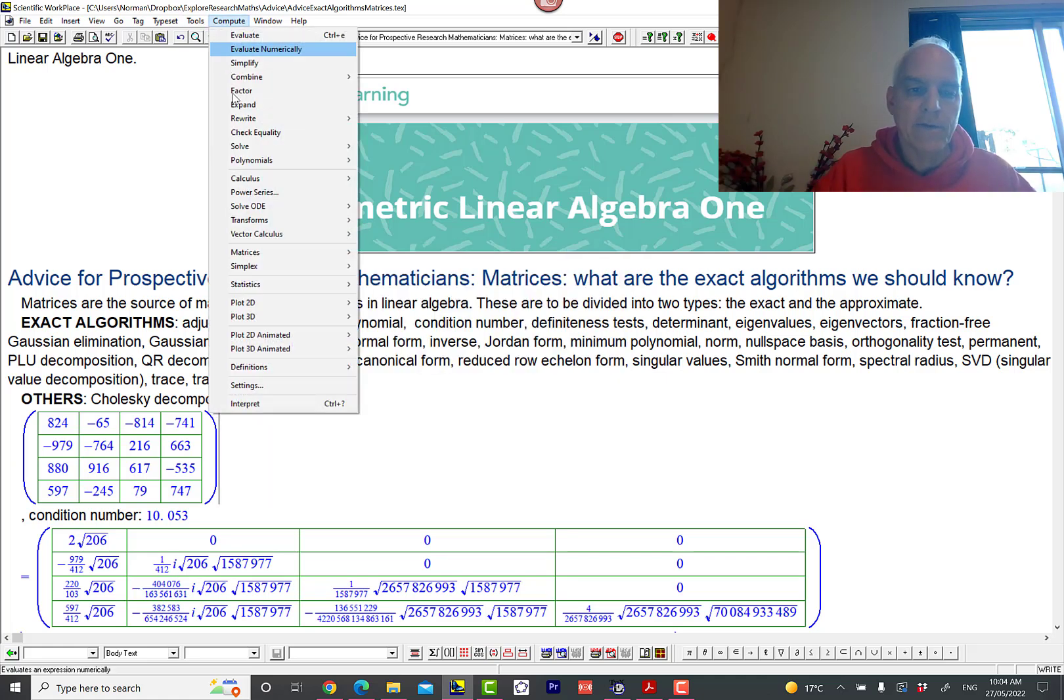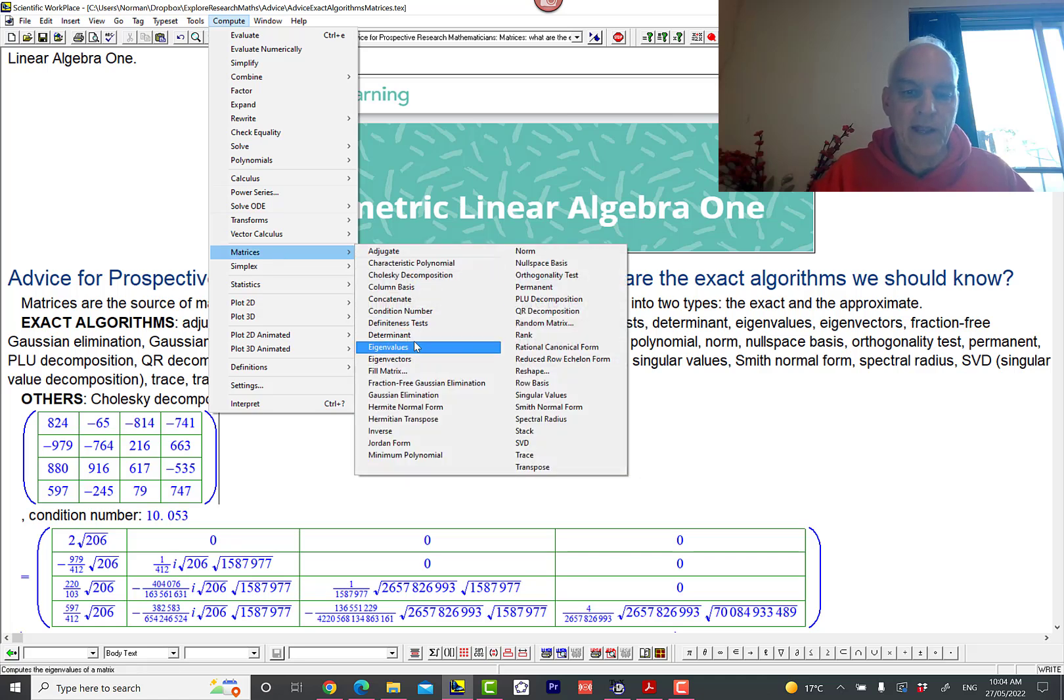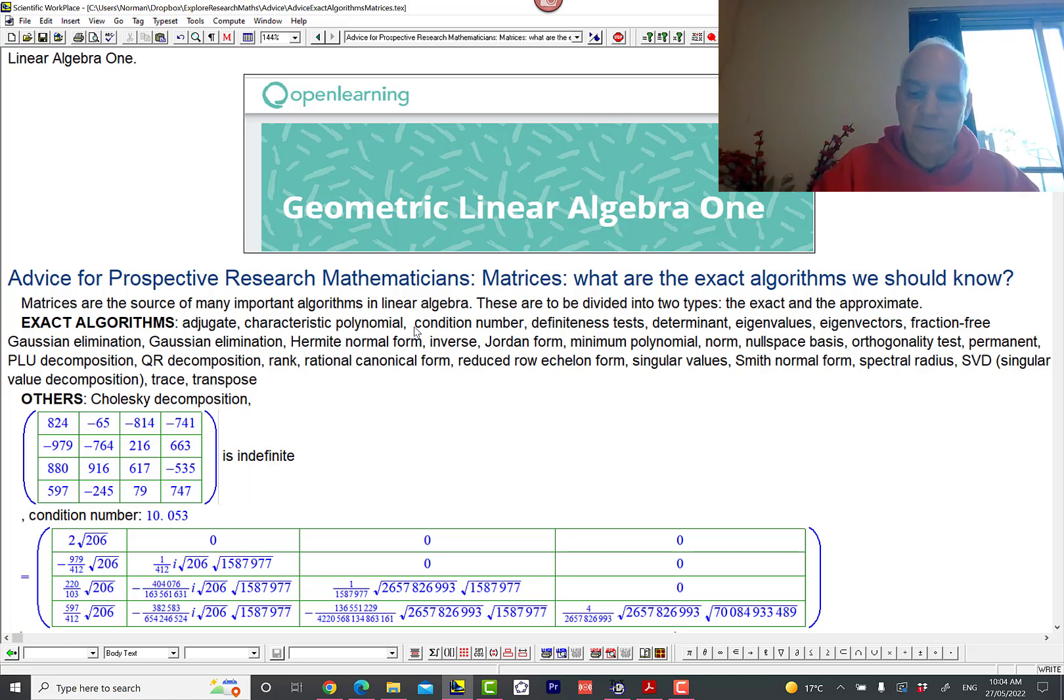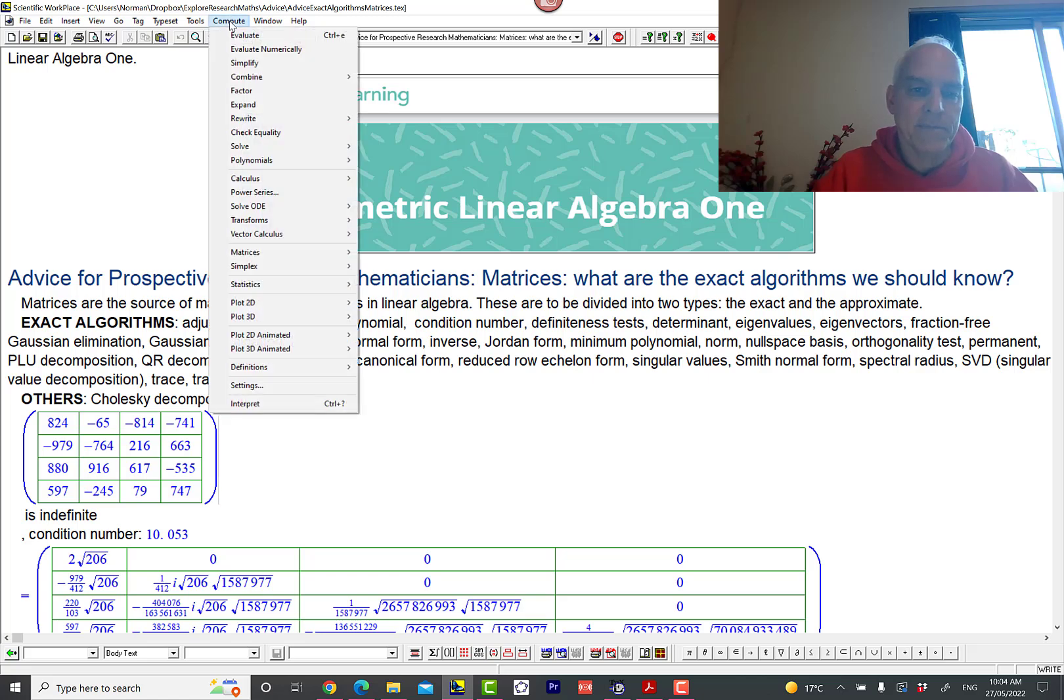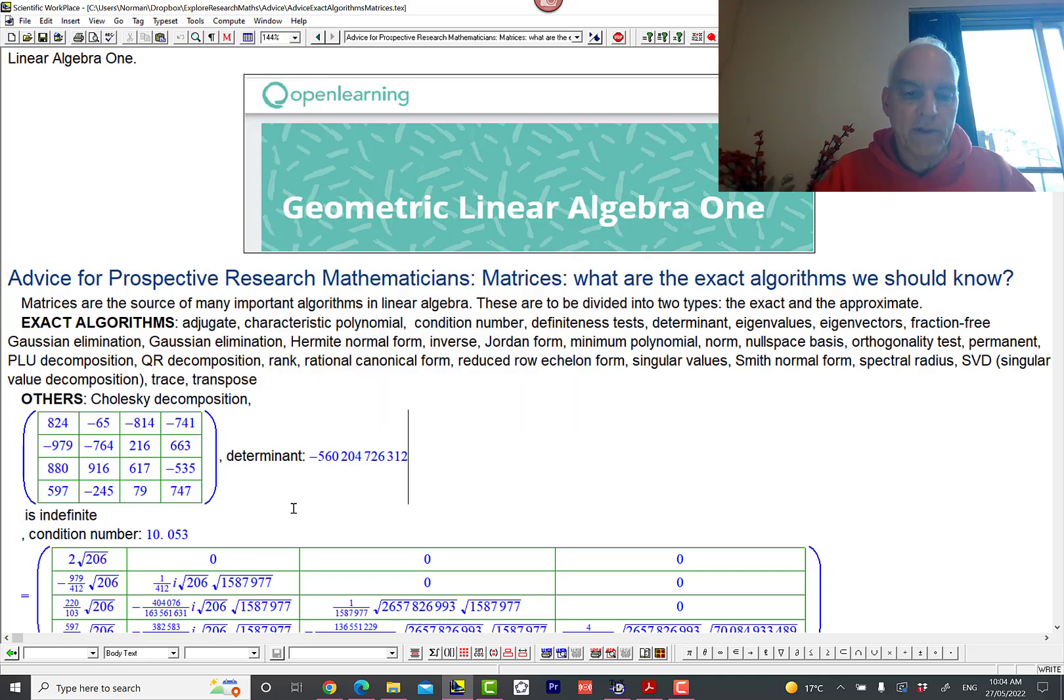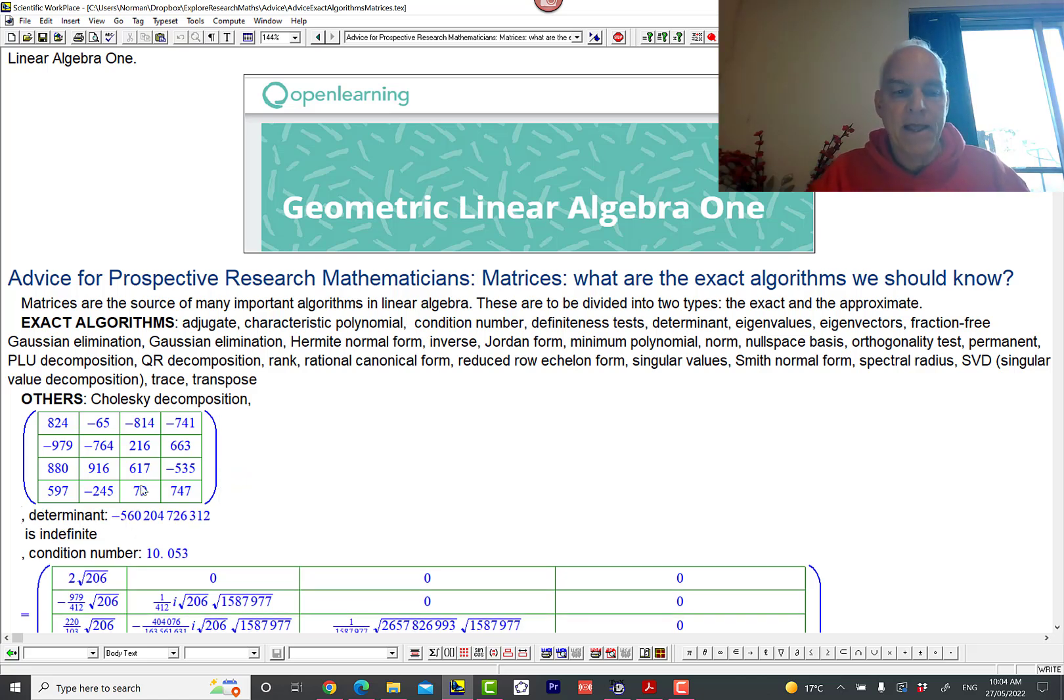Next is a definiteness test telling whether the matrix is positive definite or not. This one is not positive definite so it's indefinite. That's an exact test, it's more or less yes or no. The next one is the determinant, which is certainly one of the most important invariants—it's a number associated to the matrix and that's clearly an exact algorithm.